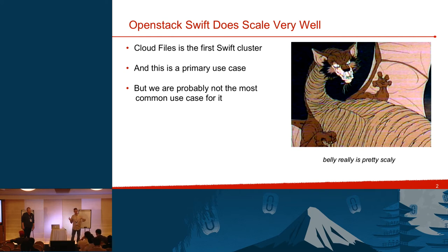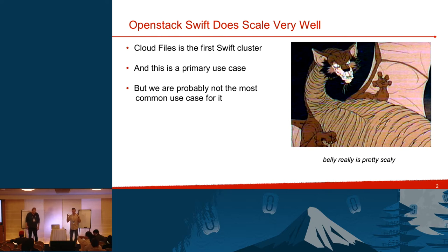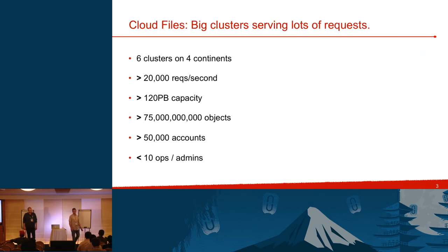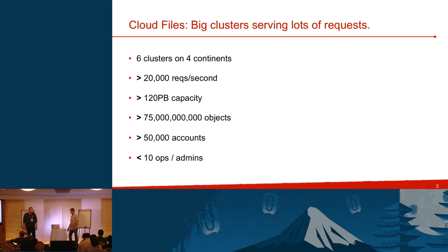First, we're not trashing Swift — OpenStack Swift does scale very well. Cloud Files is the first Swift cluster, developed at Rackspace a long time ago. We think public big cloud is a primary use case. At Rackspace, we have six clusters on four different continents, daily peaks around 20,000 requests per second, over 120 petabytes of capacity, over 75 billion objects, 50,000 accounts — all run with less than 10 ops and admins.